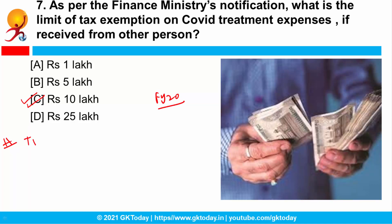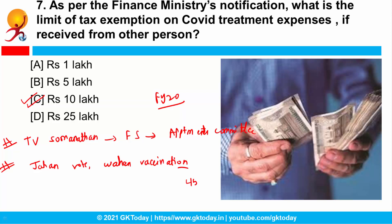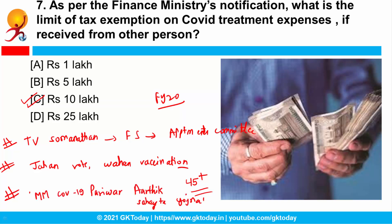Apart from it, T.V. Somanathan has been designated as Finance Secretary by the Appointments Committee of the Cabinet. Delhi has launched the 'Jaha Vote Wahan Vaccination' campaign, under which people aged 45 years and above can get vaccinated directly at their respective polling stations. Delhi has also launched the Mukhyamantri COVID-19 Parivar Arthik Sahayata Yojana, which provides ₹50,000 financial assistance to families who have lost a member due to COVID-19.